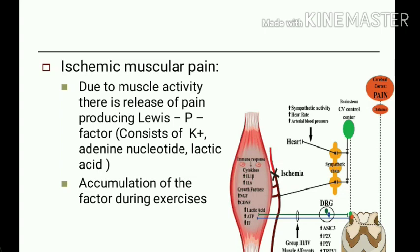Another condition is ischemic muscular pain, which is due to activity of muscle that releases a pain-producing substance called Lewis P factor. This Lewis P factor consists of potassium, adenine nucleotide, and lactic acid. It passes out into the tissue spaces and is normally removed by the bloodstream, but during exercise it accumulates, and when it reaches a certain concentration it produces pain.